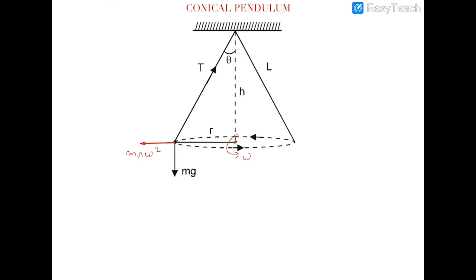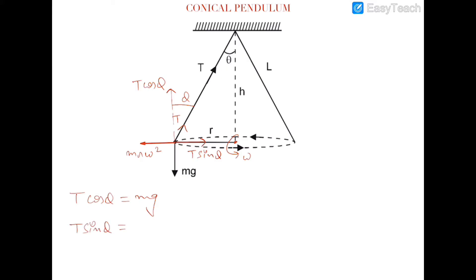The tension force acts along the rope. If this angle is theta, then the component of tension in the vertical direction is T cos theta and the horizontal component is T sin theta. We need to find the time period of this conical pendulum. T cos theta balances mg, and T sin theta balances mr omega squared.